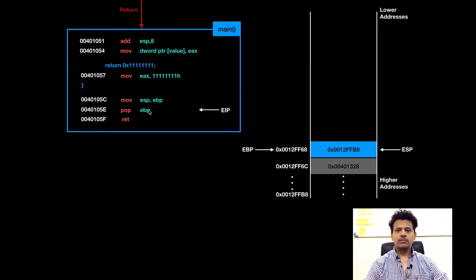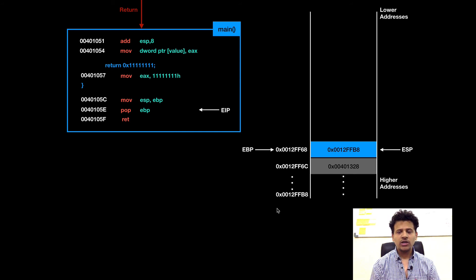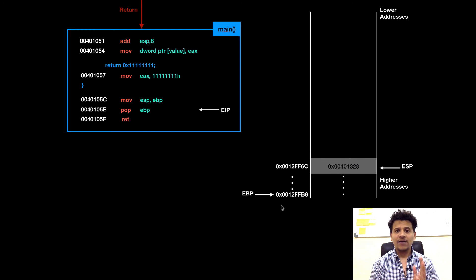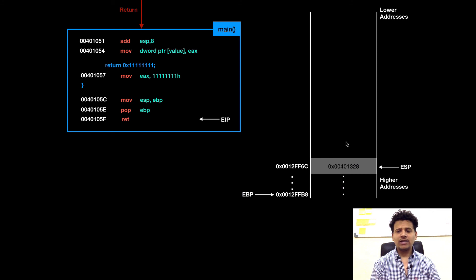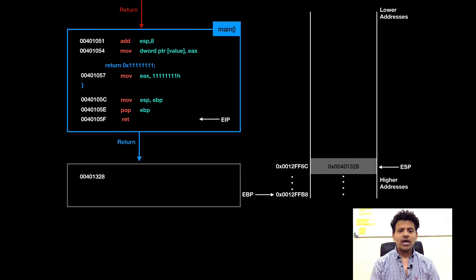Next instruction is POP EBP. The top of the stack will get popped into EBP. Currently, the top of the stack is 0012FB8. That value will get popped into EBP, and EBP will point at 0012FB8. We are doing this because main is returning to the function that called it — the initialization function. It is main's responsibility to give back the calling function its own stack frame pointer. Now EBP is pointing at 0012FB8, which is the stack frame pointer of the initialization function that called main. Next, main is returning. The return address at the top of the stack — 00401328 — will be moved into EIP, and EIP will begin execution there. That value is the return address of the function that called main. Main has returned to that function, and EIP will now start execution from 00401328. We stop our execution here because this is beyond the scope of our program.